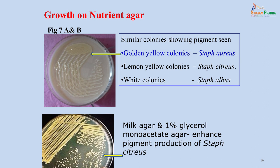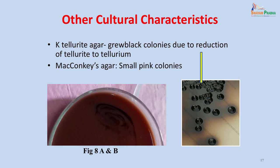Coagulase-negative staphylococci also give pigment on nutrient agar: lemon yellow colonies are seen with Staphylococcus citreus and white colonies with Staphylococcus albus. Sometimes the pigment is not very clear and needs to be enhanced, in which case the organism is grown on milk agar or 1% glycerol mono-acetate agar to obtain bright lemon yellow colored colonies. When plated on potassium tellurite agar, Staphylococcus aureus grew black-colored colonies due to reduction of tellurite to tellurium in the medium.